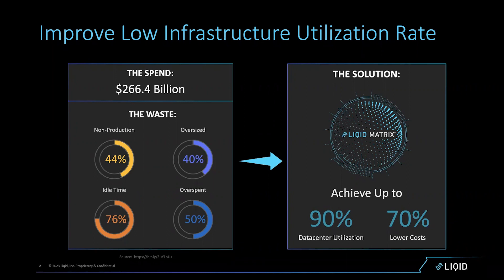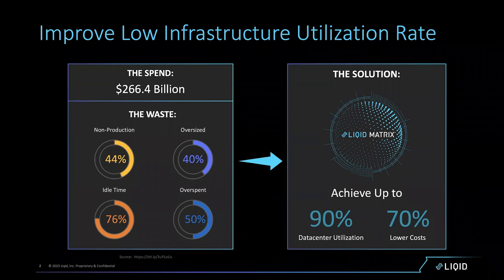With new technologies like the ones Liquid is deploying, we're able to change the utilization rates of very expensive, very power-hungry hardware deployed in our data centers. In turn, this has a direct impact on cost. By moving to a dynamic infrastructure environment, we have the ability to change the cost of deploying these very expensive assets — leveraging software-defined technologies.